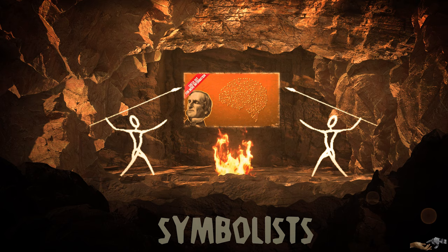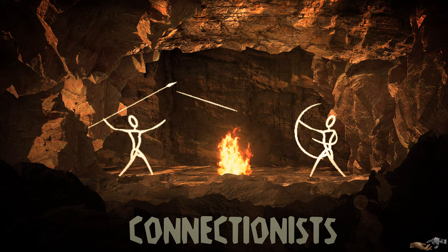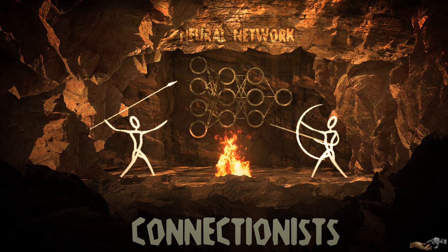The second tribe is the connectionists. They mostly try to digitally re-engineer the brain and all of its connections in a neural network. The most famous example of the connectionist approach is what is commonly known as deep learning. We discuss parts of the rise of connectionism in the birth of AI video.